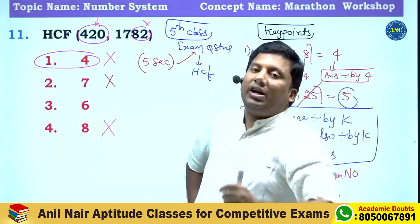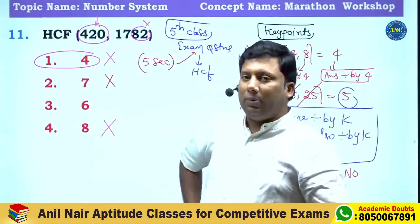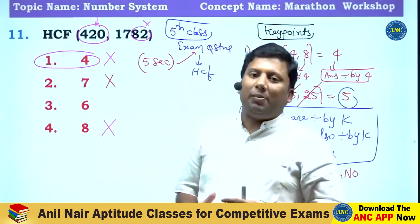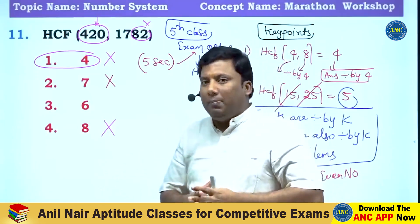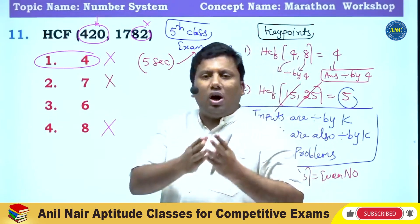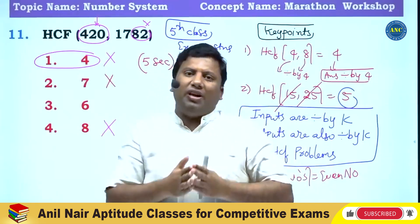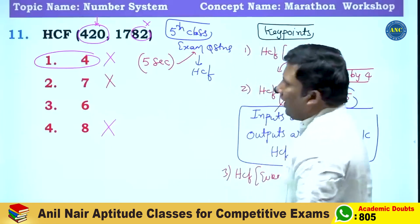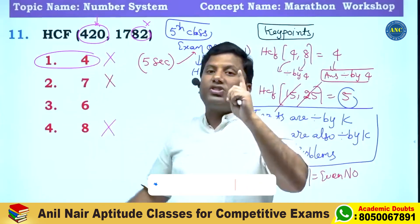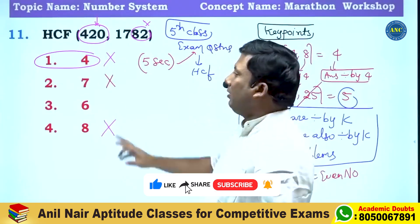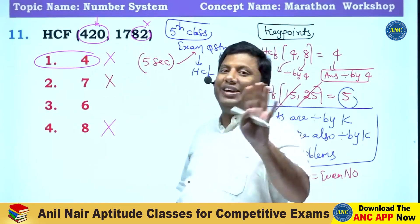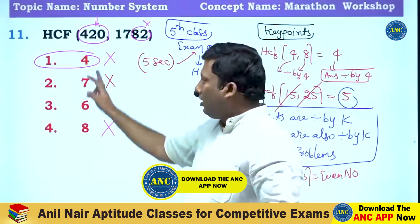LCM and HCF — we discussed almost 8.5 hours in our CAT paid batch. In HCF related problems: if all inputs are divisible by K, the output is also divisible by K. Checking option 10: 420 is divisible by 10, and 1782 — any number divisible by 10 must have unit digit 0. 1782 does not end in 0, so 10 is out. If not divisible by 10, how can it be divisible by 20? So 20 is out.